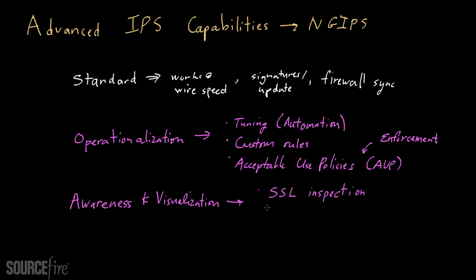Aside from SSL inspection, there may be more broad awareness — not just of traffic going into a network, but what's called Network Behavioral Analysis, sometimes abbreviated as NBA.